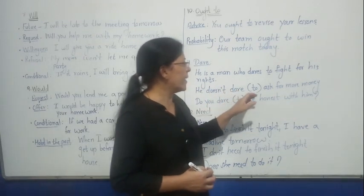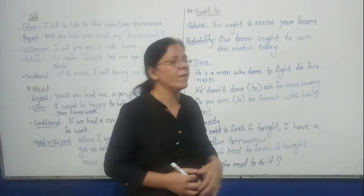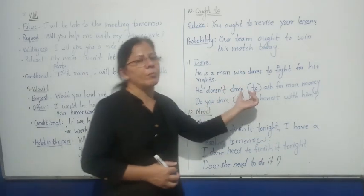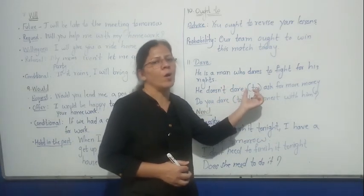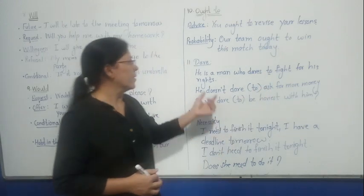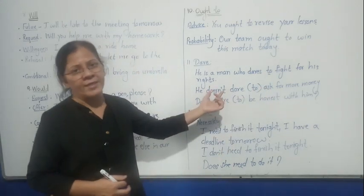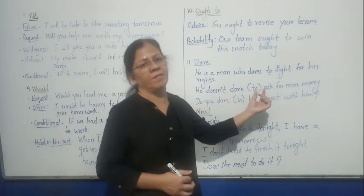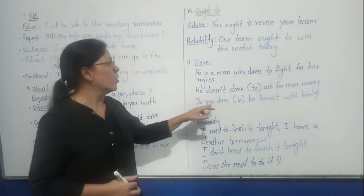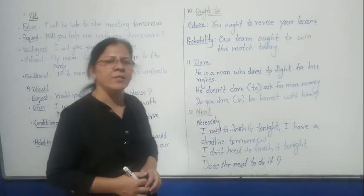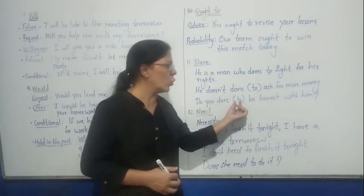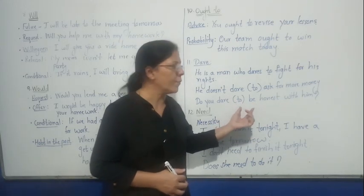In negative sentences, 'to' is optional. For example: 'He doesn't dare ask for more money.' You may or may not use 'to.' It is a negative sentence, so 'to' is optional. In interrogative sentences, 'to' is also optional. For example: 'Do you dare be honest with him?' — 'to' is again optional here.